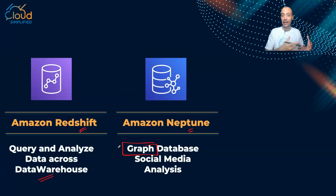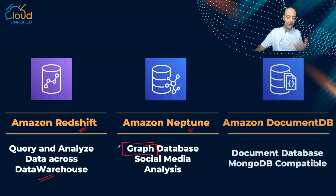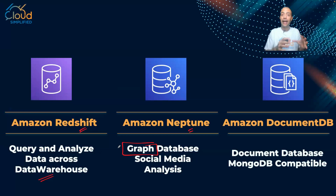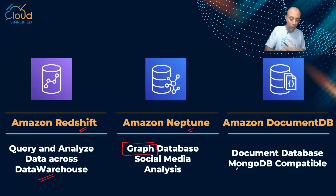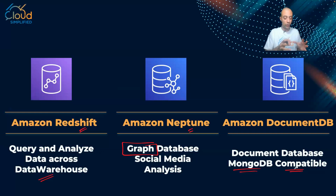Number three is Amazon DocumentDB, which is an example of a document database offering. The keyword in the exam is if you need a database that is backward compatible with MongoDB. DocumentDB offers the same APIs as MongoDB and is backward compatible with MongoDB.